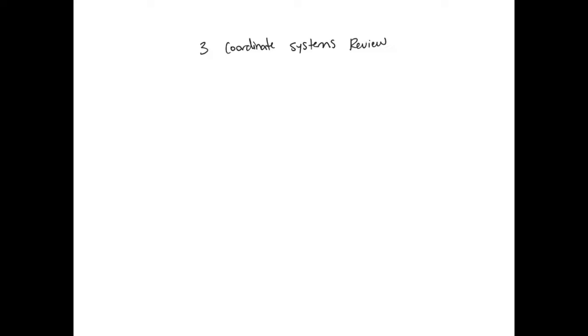So far, we've looked at three different coordinate systems. The first coordinate system was the x, y, z coordinate system. These are rectangular coordinates, and this is the one that you're probably most familiar with.